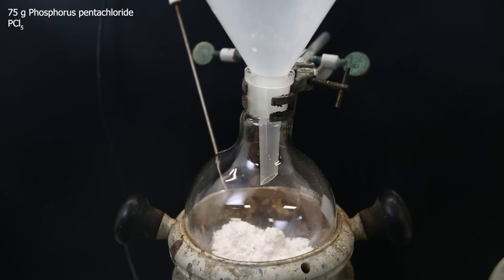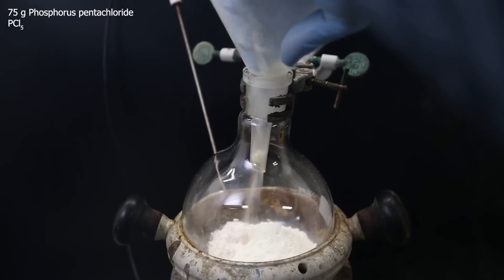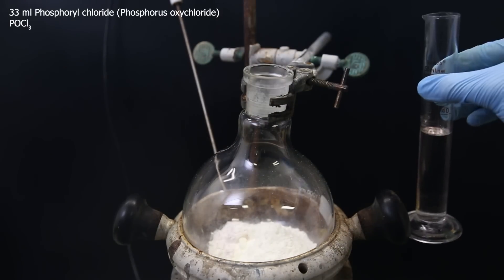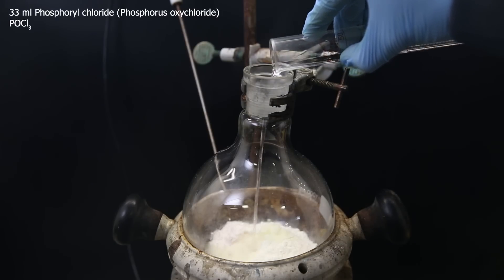So first, I weighed out 75 grams of phosphorus pentachloride in the same dish and add it directly on top of the material. I then add 33 mils of phosphoryl chloride also directly on top of it, without any solvent.